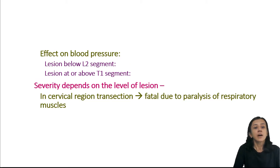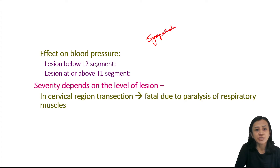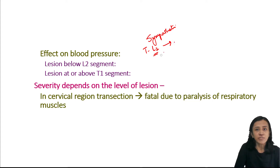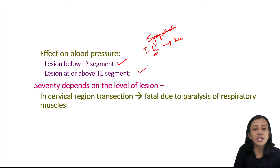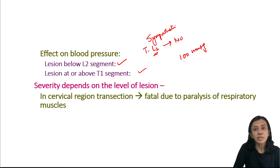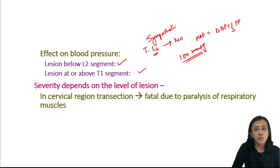Regarding blood pressure, sympathetic vasoconstrictor fibers leave the spinal cord between T1 and L2 segments. If the lesion is below L2, blood pressure is not affected. If the lesion is at or above the T1 segment, there is a drastic fall in blood pressure — mean arterial pressure falls from 100 mmHg to 40 mmHg. Mean arterial pressure equals diastolic blood pressure plus one-third of pulse pressure.